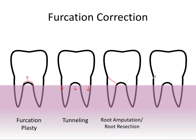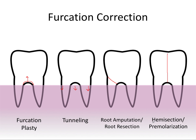The last treatment option is called hemisection, which involves cutting a molar in half. Premolarization refers to retaining a molar functionally as two premolars. We perform the same endodontic treatment to clean out the pulp and retain the tooth as two premolars. To summarize: furcationplasty — move the furcation up; tunneling — move the tissues down; root amputation — cut off a root; hemisection — cut the tooth in half.